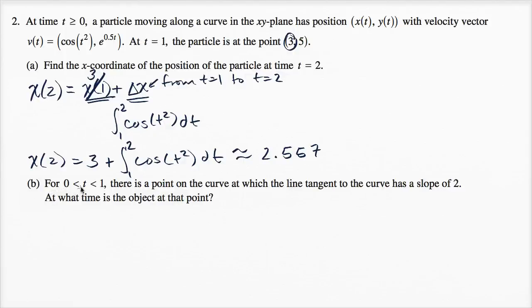Part B. For 0 < t < 1, there is a point on the curve at which the line tangent to the curve has a slope of 2. At what time is the object at that point?